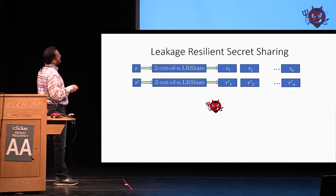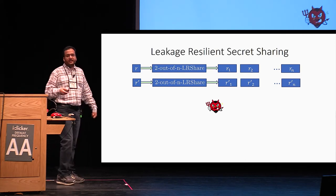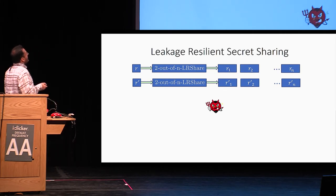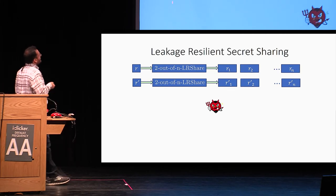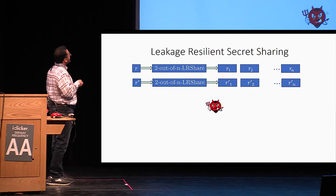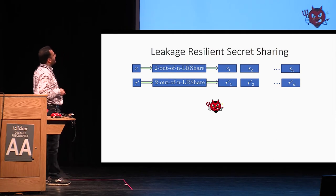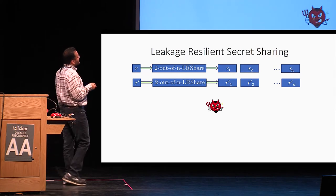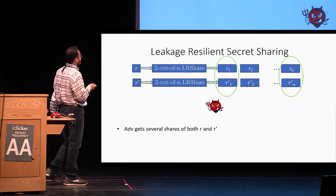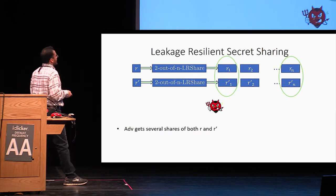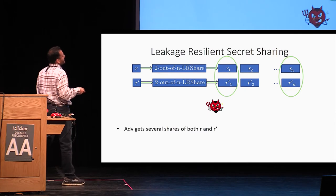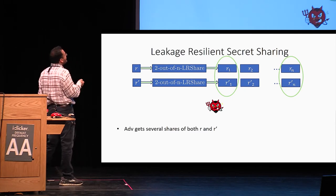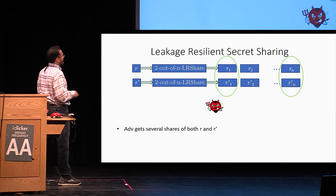To solve this problem, we use a leakage-resilient secret sharing scheme — a notion we study and construct in our paper. In this notion, we have two secrets R and R prime. Both are shared using a two-out-of-N leakage-resilient secret sharing scheme. The adversary gets several shares of both R and R prime — enough potentially to reconstruct them completely.